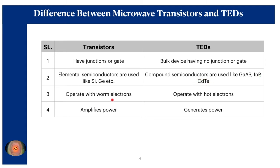Transistors are operated with warm electrons, while transfer electron devices are operated with hot electrons. In both cases electric fields are applied, but for transfer electron devices the electric field applied is so large that after a certain point the velocity of those electrons gets saturated, and they transfer to the upper valley which has a lower mobility compared to the previous energy level. Transistors amplify power, whereas the GAN diode is used for power generation in microwave frequency ranges.